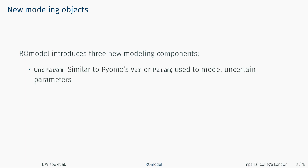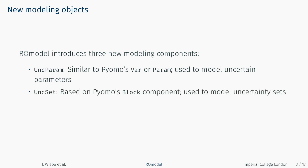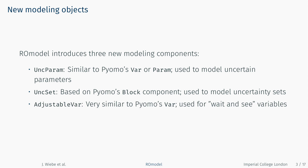The first component is UncParam. UncParam is similar to PyOMO's var and param components and is used to model uncertain parameters, the key ingredient of every robust optimization problem. The second component is UncSet, which is based on PyOMO's block component and is used to model uncertainty sets. Finally, AdjustableVar works similarly to PyOMO's var component but is used to model adjustable variables that are decided after some of the uncertainty has been revealed.